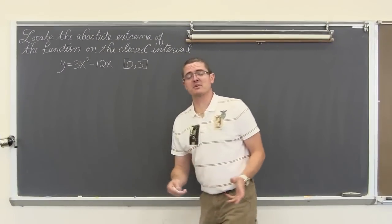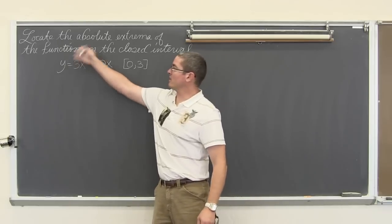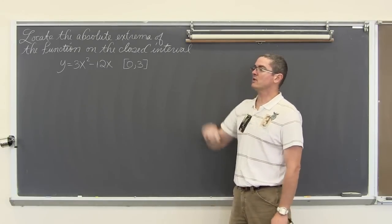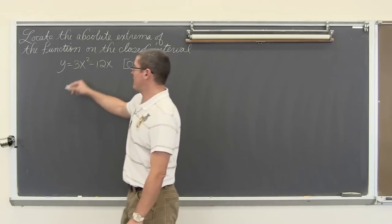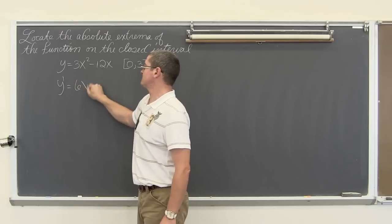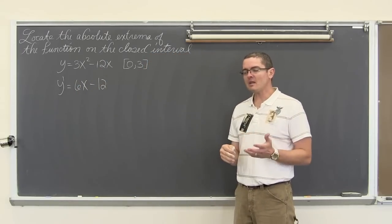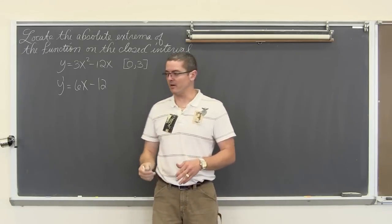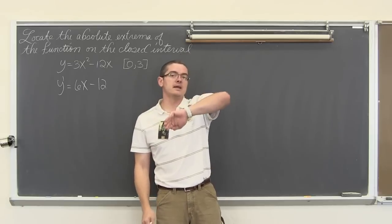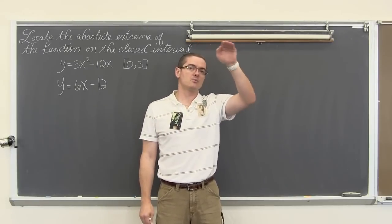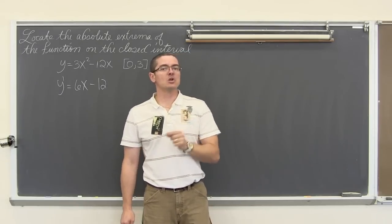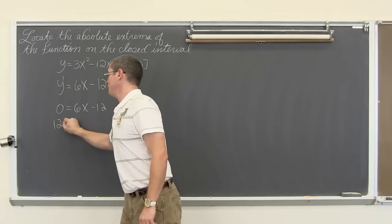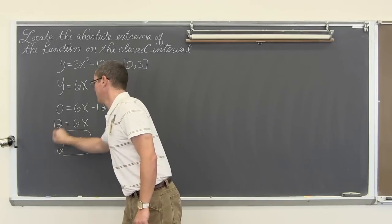For our next example, we are going to locate the absolute extrema of the function on the closed interval. We have y equals 3x squared minus 12x on the closed interval of zero to three. We are going to find the first derivative, which is 6x minus 12. We set the first derivative equal to zero because at a maximum or minimum the slope is going to go from positive to negative, and right at the very peak or the bottom you are going to have a slope of zero. Setting 6x minus 12 equal to zero gives 12 equals 6x, and x is equal to 2. That is our critical value.